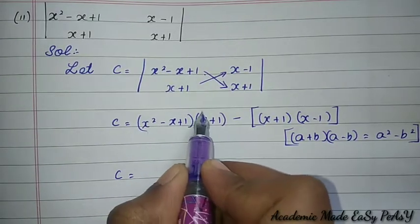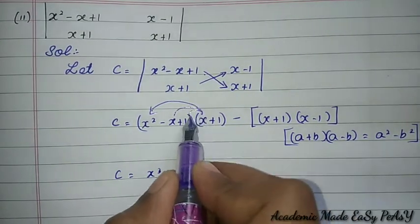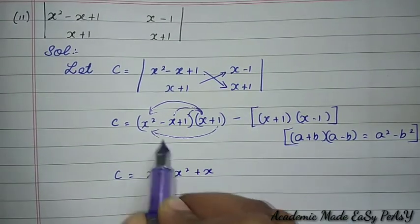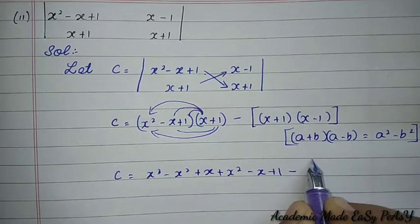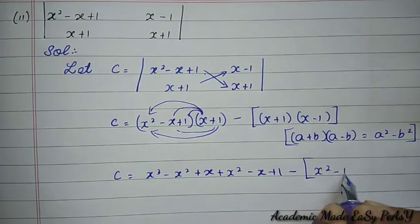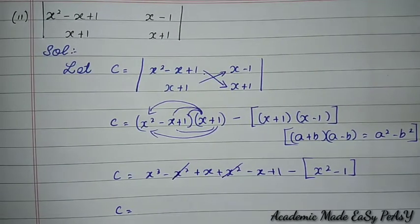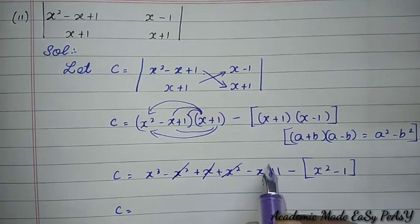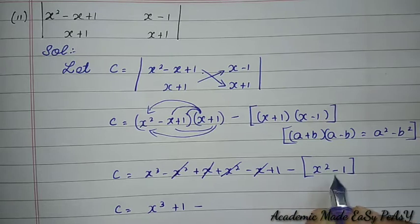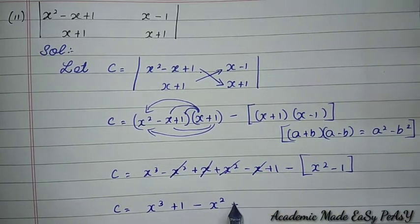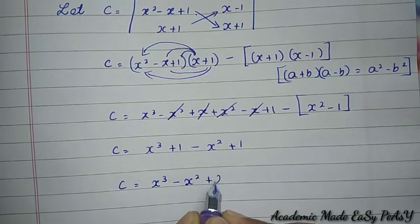Expanding: (x² − x + 1)(x + 1) = x³ − x² − x² + x + 1... and (x + 1)(x − 1) = x² − 1. After cancellation of the x² and x terms, C = x³ + 1 − (x² − 1) = x³ − x² + 2. This is the required solution.